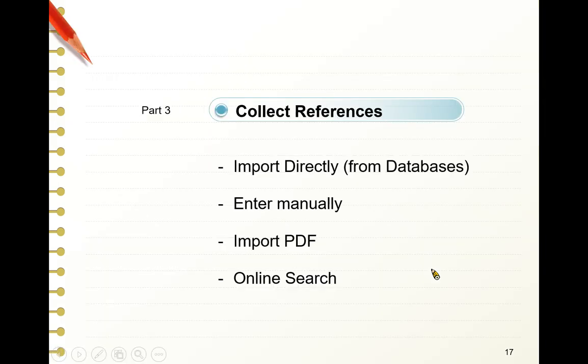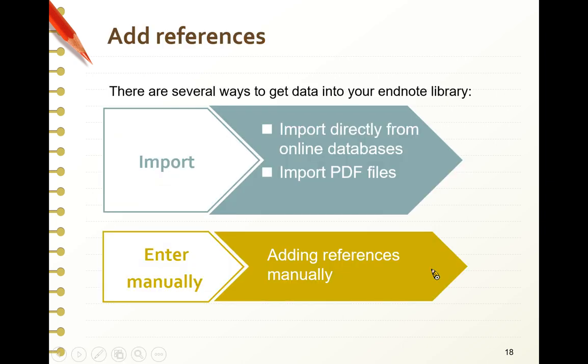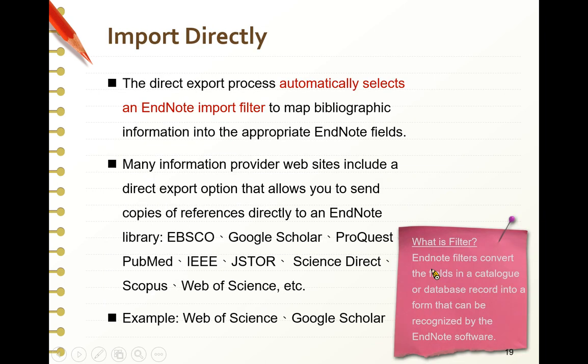There are several ways to get data into your EndNote library. One is to import directly from online databases. Another is to import PDF files. And the other is to enter manually. Importing directly is the most convenient way — you can export bibliography records from databases such as EBSCO, Google Scholar, Scopus, Web of Science, or PubMed. Let me demo how to export bibliography records from Web of Science into an EndNote library first.